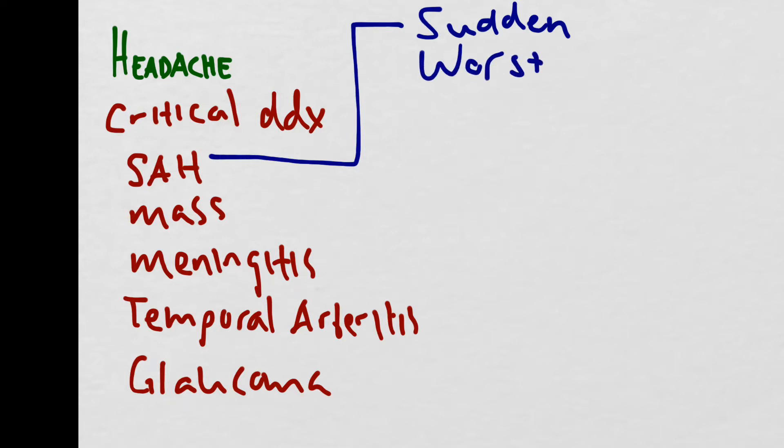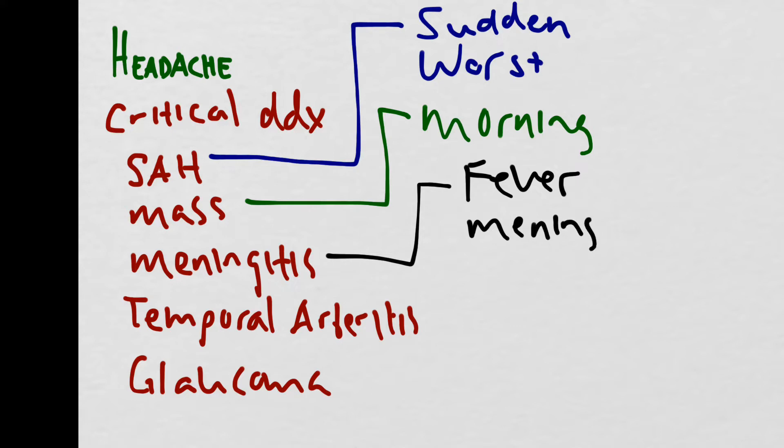For patients with an intracranial mass, they may have a headache that's worse in the morning and gets better throughout the day. Patients with meningitis will present with fever and meningismus and, in really bad cases, altered mental status. Patients with temporal arteritis may have tenderness over the temporal artery.